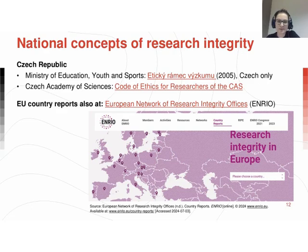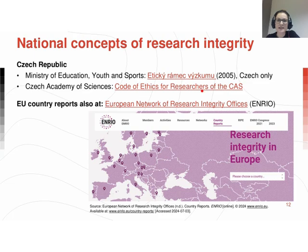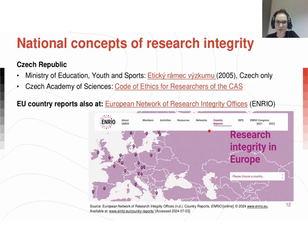Speaking of national concepts, for the Czech Republic there is a document prepared by the Ministry of Education, Health and Sports from 2005, available only in Czech. There is also the Code of Ethics for researchers of the Czech Academy of Sciences. For other European countries, you can check a website that provides resources and country reports with information about national structures for research integrity — you can simply select the country.